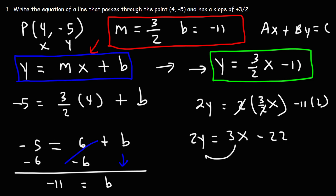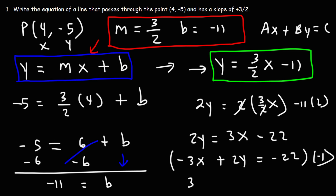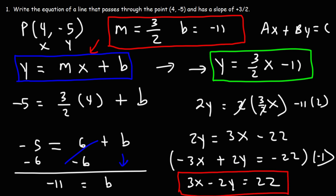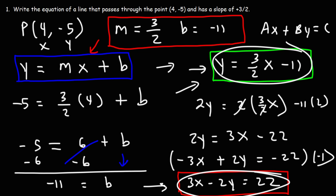The 2s cancel to give us 3x, and 11 times 2 is 22. Now I'll move 3x to the other side — it was positive on the right, so it becomes negative on the left. Then multiplying everything by -1 gives us positive 3x - 2y = 22. That's the equation in standard form. You need to know how to convert between slope-intercept form and standard form.